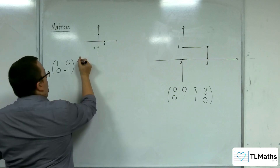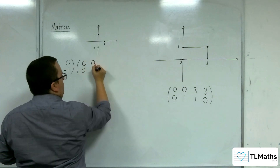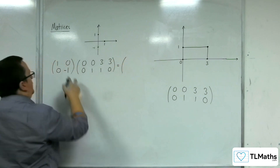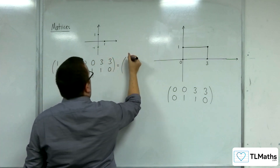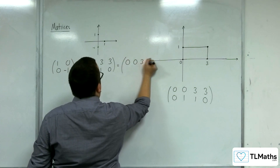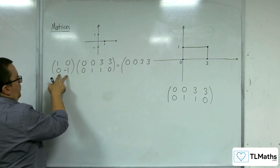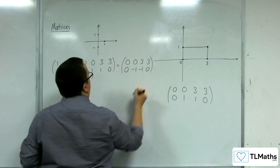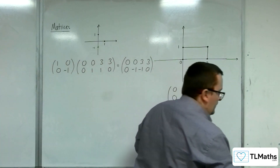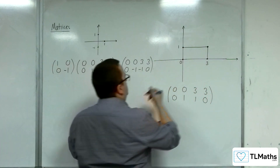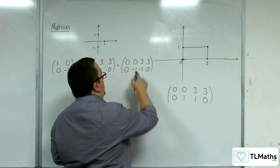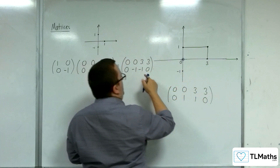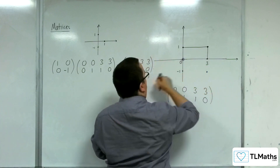So let's apply it to our matrix and see what happens. We have the first row (1, 0) multiplied with each column, so we get 0, 0, 3, 3. Then the second row (0, -1) multiplied with each column gives us 0, -1, -1, 0. So we have the points (0, 0), (0, -1), (3, -1), and (3, 0).